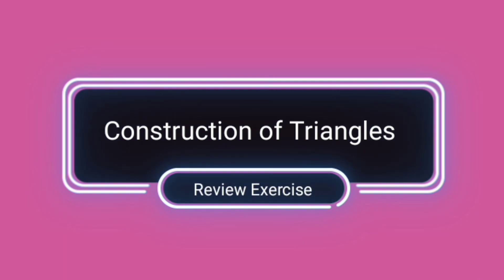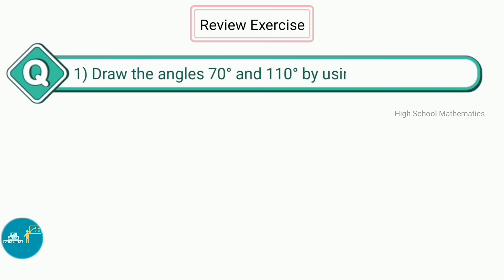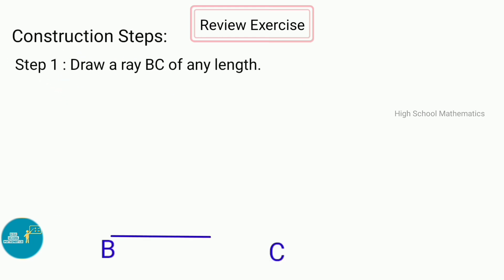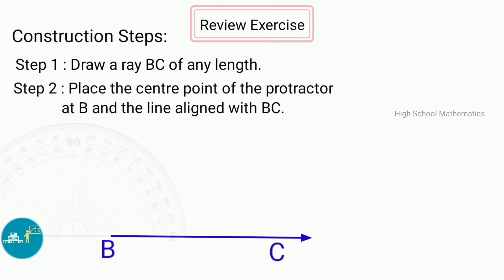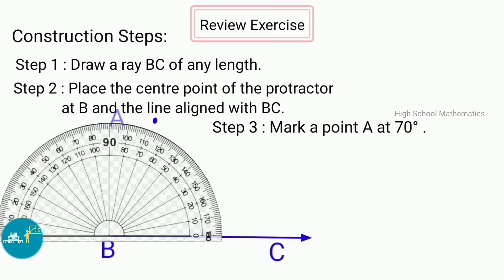Question number 1: Draw angles of 70 degrees and 110 degrees using a protractor. Construction steps: Step 1 — draw a ray BC of any length. Step 2 — place the center point of the protractor at P and align the line with BC. Step 3 — mark a point A at 70 degrees.